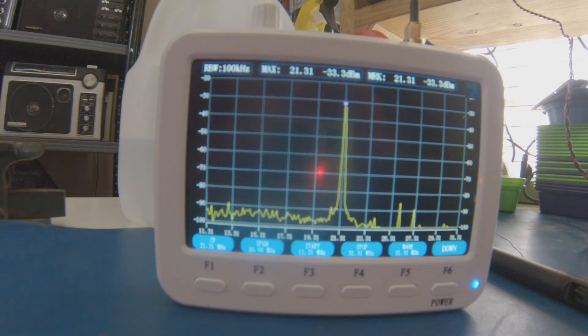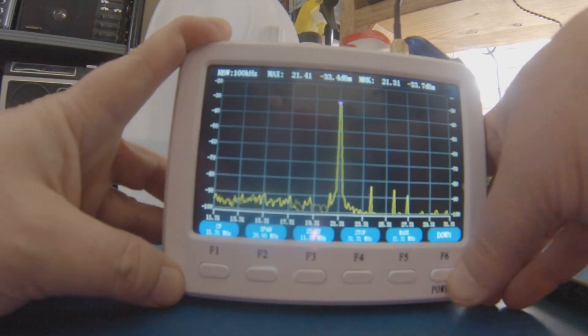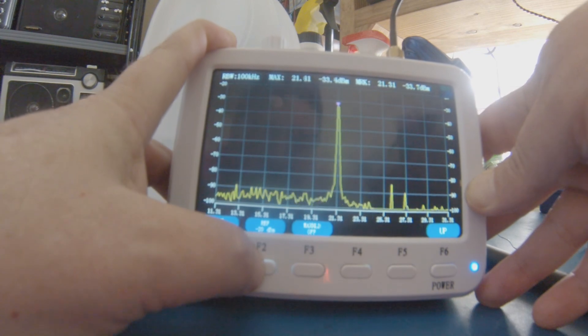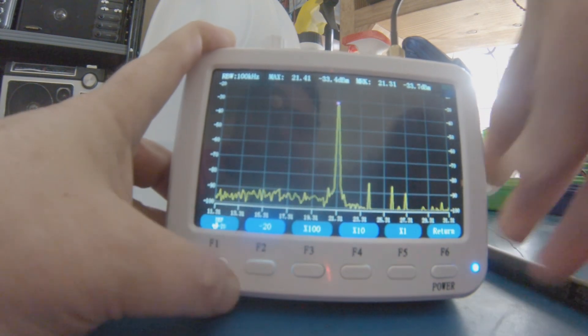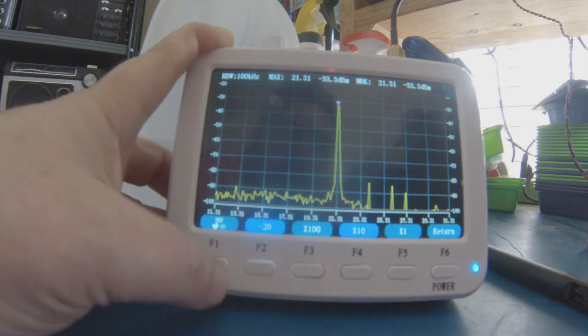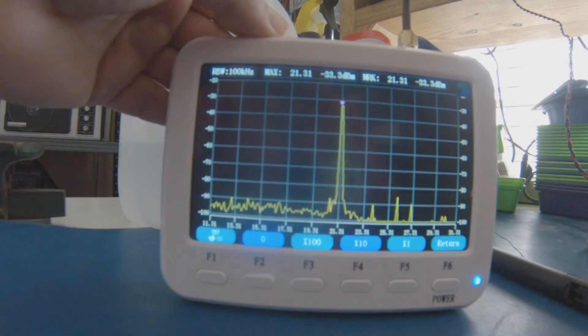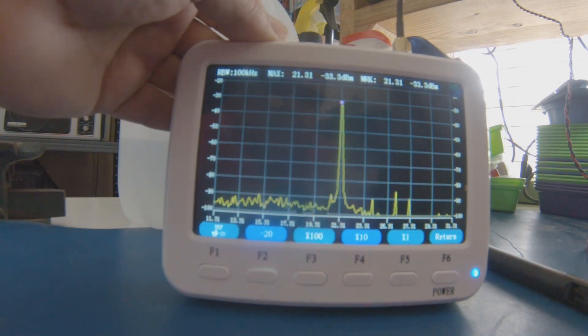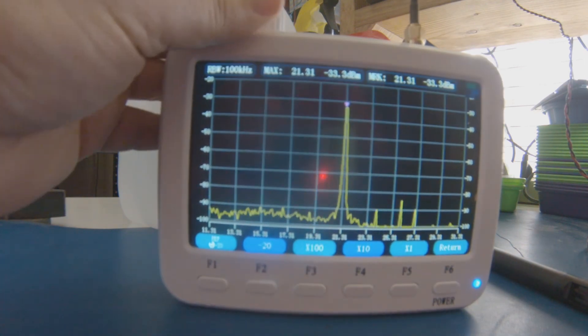You can also set the start and stop frequencies with the soft buttons. The only other thing I haven't shown you is the reference level, which is currently set to minus 20 dBm. As you can see, I have the option to change it with the scroll wheel. I can set it to minus 30, minus 10, but I'm going to leave it at minus 20.